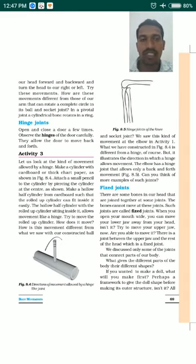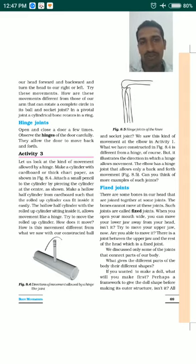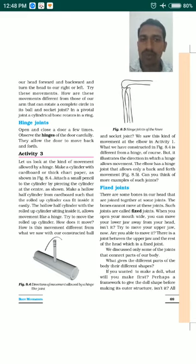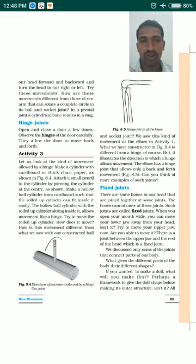Now let's go to the third type of joint — the hinge joint. You may all be familiar with hinge joints from doors. Try to close the door of your house or any building and observe the hinge. Open and close the door — you are only able to move it forward and backward. Observe the hinge fixed to the door carefully.